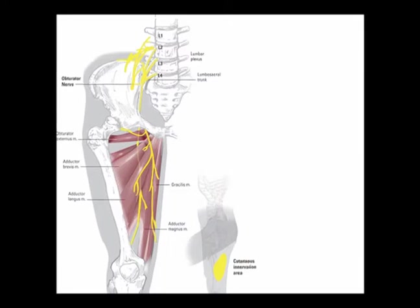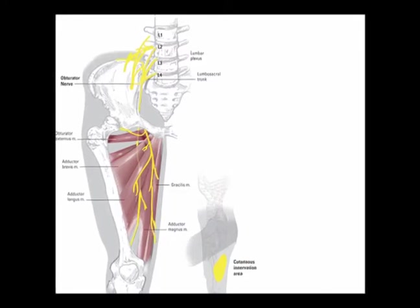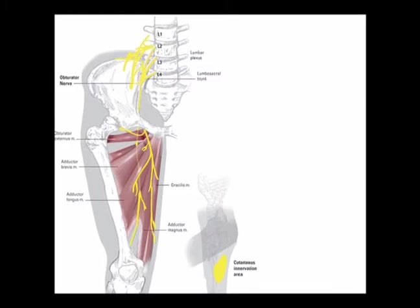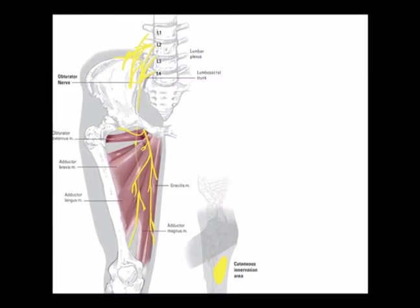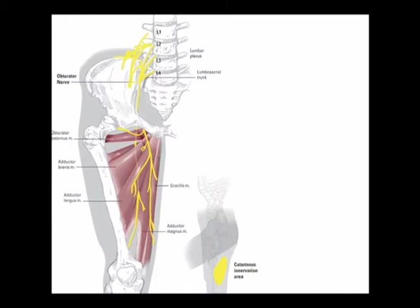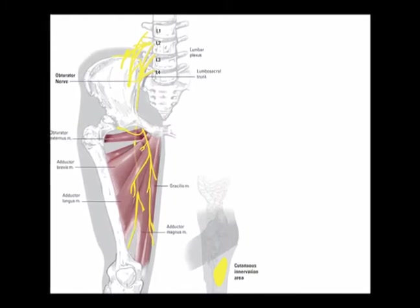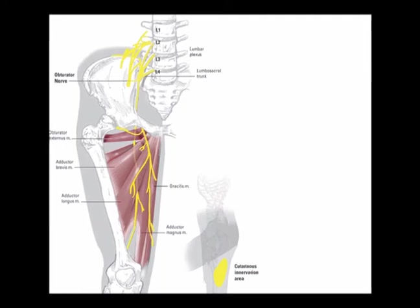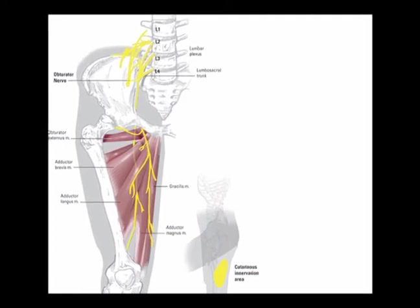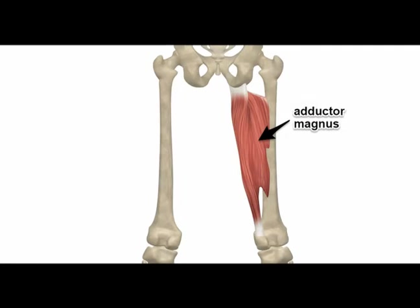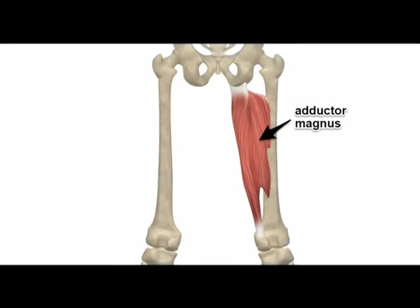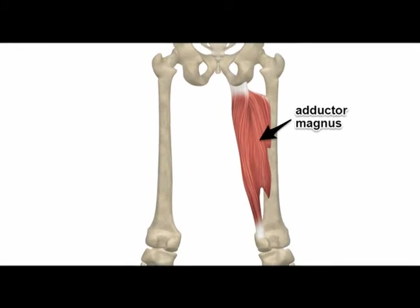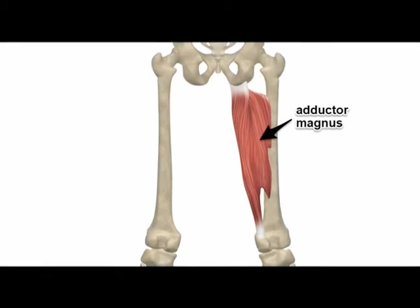For the innervation, the posterior division of the obturator nerve innervates most of the adductor magnus. The vertical section, also known as the hamstring portion, is innervated by the tibial nerve from vertebral levels L2, L3, and L4. The concentric actions of the adductor magnus are hip adduction, hip flexion, and hip extension.